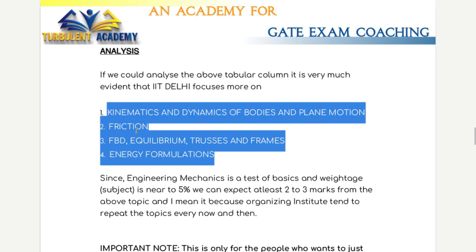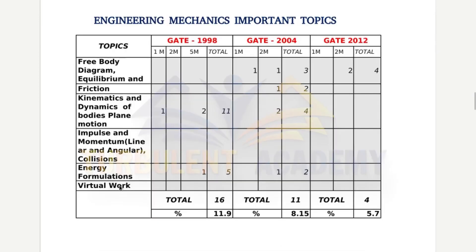For people who just want to qualify, concentrate on those two to three core topics. However, if you are aiming for an all-India rank below 1000, don't rely only on important topics — cover everything. The GATE organizing institute can set a tricky conceptual question from virtual work, even though exclusive virtual work questions haven't appeared in previous papers. If the committee plans a tough question, it could come from virtual work. So top-rank aspirants should not skip any topic.